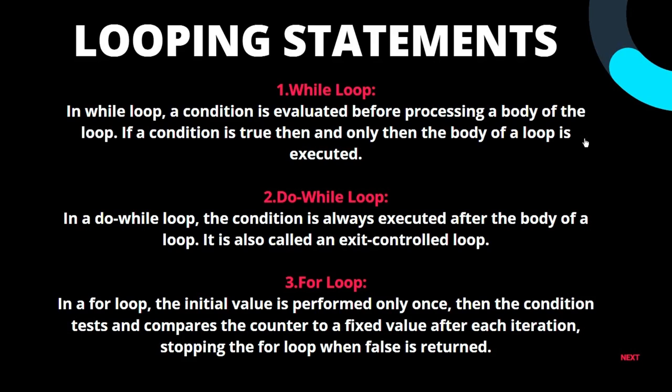In a for loop, the initial value is performed only once. Then the condition tests and compares the counter to a fixed value after each iteration, stopping the for loop when false is returned.